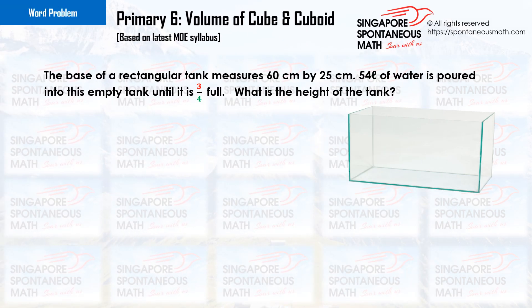The base of a rectangular tank measures 60 cm by 25 cm. 54 liters of water is poured into this empty tank until it is three-quarters full. What is the height of the tank?